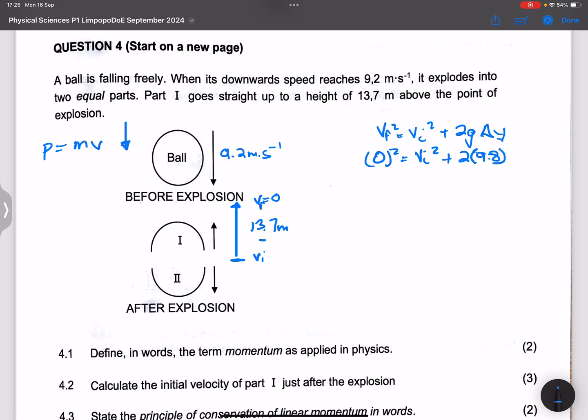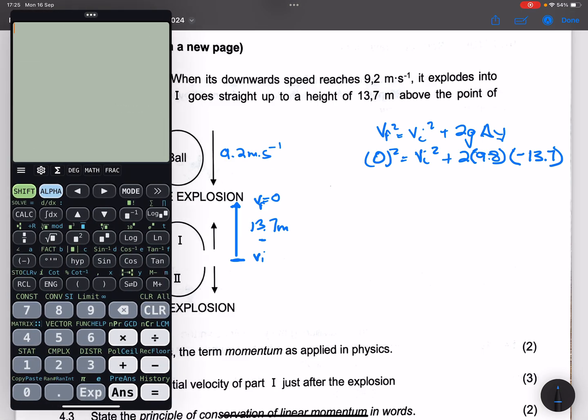Remember that acceleration due to gravity always is downwards, 9.8 times Δy, but this object is displaced upward, so that's minus 13.7.